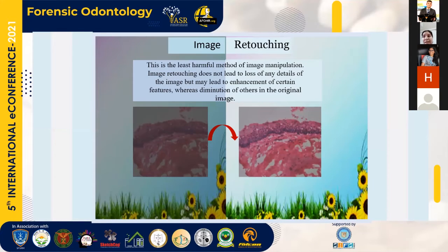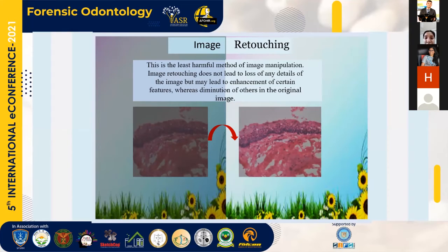Let us begin with a short description of the ways in which a digital image can be manipulated. The first one is image retouching. This is the least harmful method of image manipulation. The only aim of image retouching is to make the subject in the image more attractive, and thus it is the most common method. Image retouching does not lead to loss of any details of the image, but may lead to enhancement of certain features whereas diminution of others in the original image.